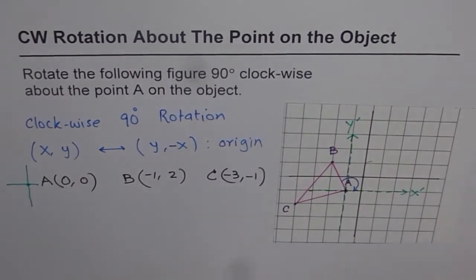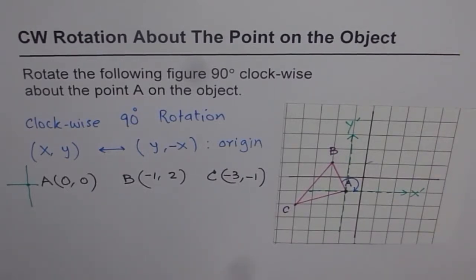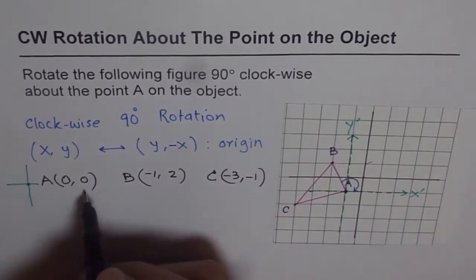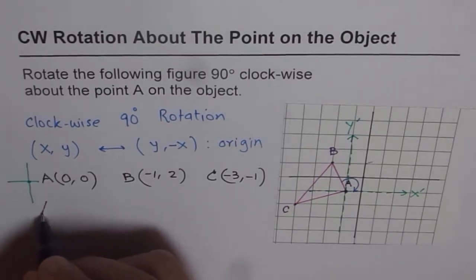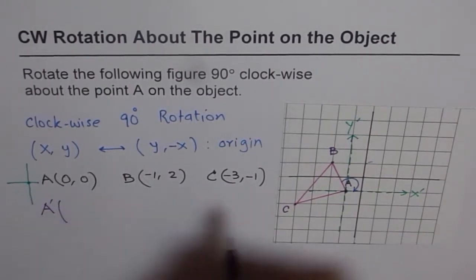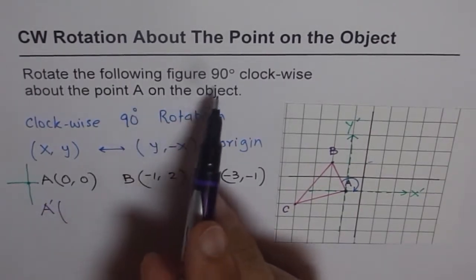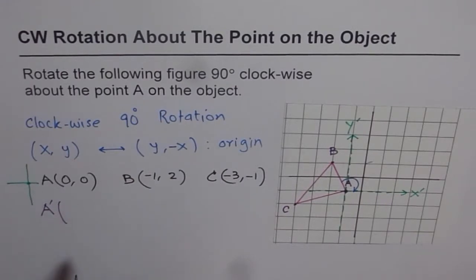Now we can apply the rotation rule. For A', after the 90-degree clockwise rotation, we swap x and y — we still get (0, 0), and making y negative still gives 0. So A' = (0, 0), as expected.